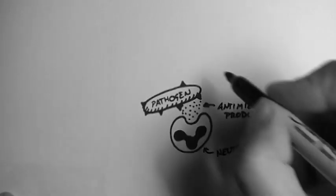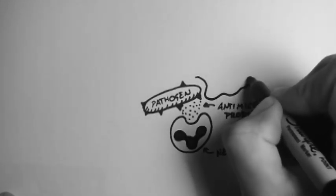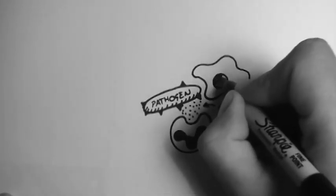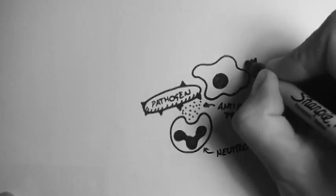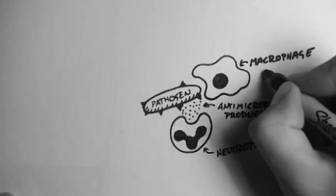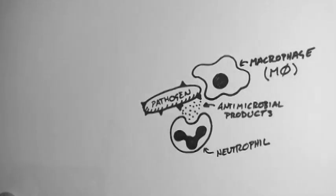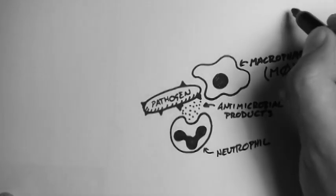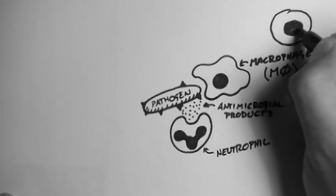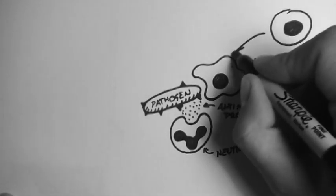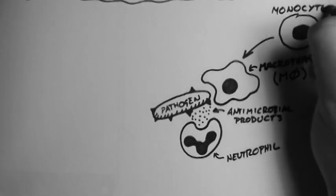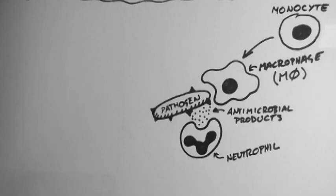If this doesn't work, then the macrophages arrive on the scene. M with a circle with a dash through it is an abbreviation for macrophage. These arise from monocytes which float around in the blood, and the macrophage attempts to eat the pathogen.